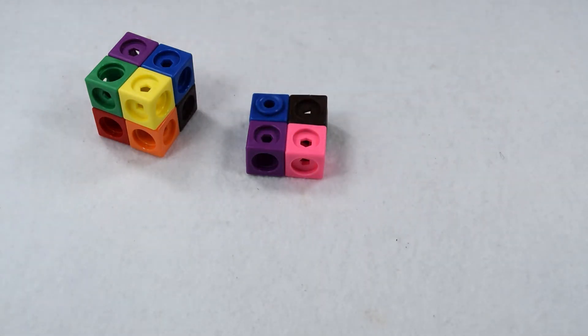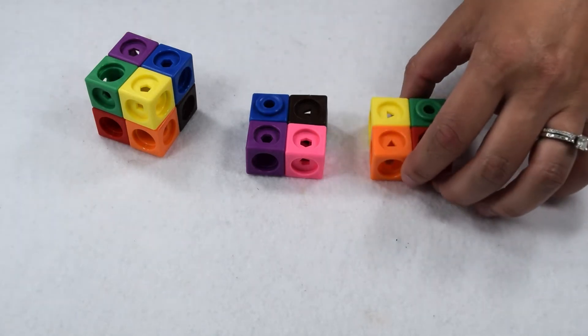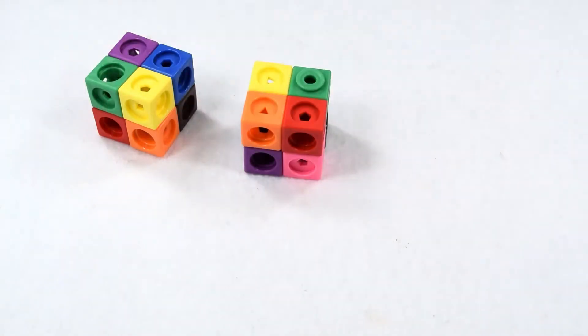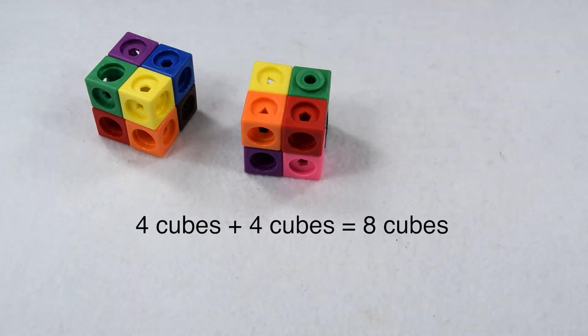Since our height is 2 inches, that means we need to make it 2 layers tall. There's another 4 cubes. When we combine it to make our cube, we have 4 cubes plus 4 cubes to give us a total of 8 cubes.